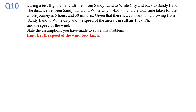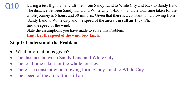So in this question, first of all we're going to let the speed of the wind be x km per hour and we're going to use Mr. Job's podium to solve this problem. He has a four-step process to go about solving problems. Step number one is to understand the problem, which means identifying what information is given in the question. So we know that the distance between Sandy Land and White City is 450km. We are told the total time taken for the whole journey. We also know there's a constant wind blowing from Sandy Land to White City and we know the speed of the aircraft in still air.